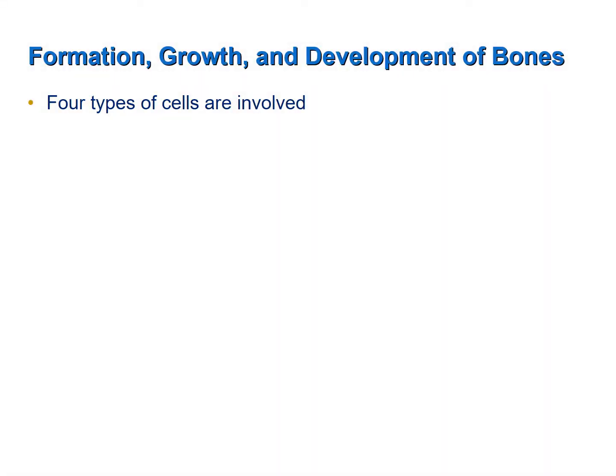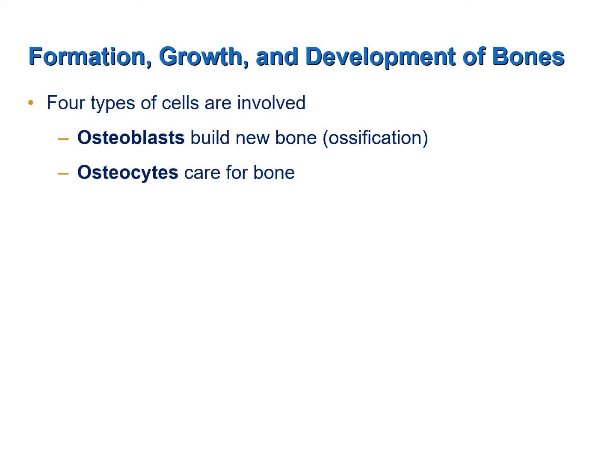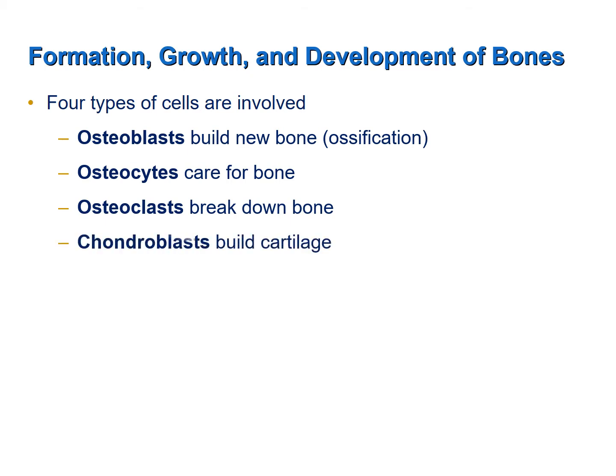The formation, growth, and development of bones involves the activities of four types of cells. Osteoblasts are responsible for building new bone. Osteocytes are responsible for caring for bone after it has been built by the osteoblasts. Osteoclasts break down existing bone. And finally, chondroblasts are responsible for building new cartilage.